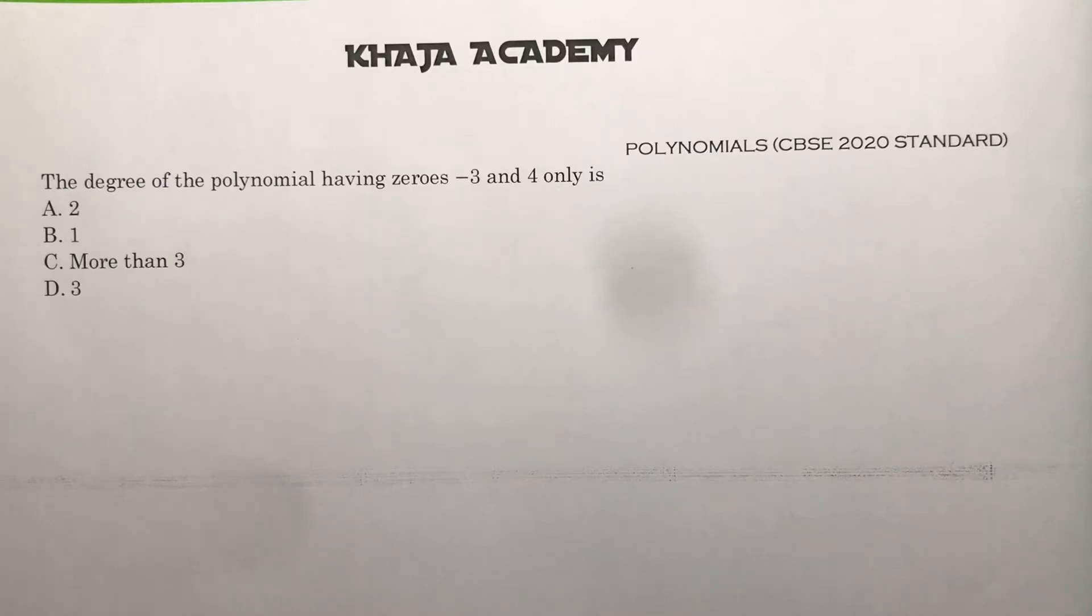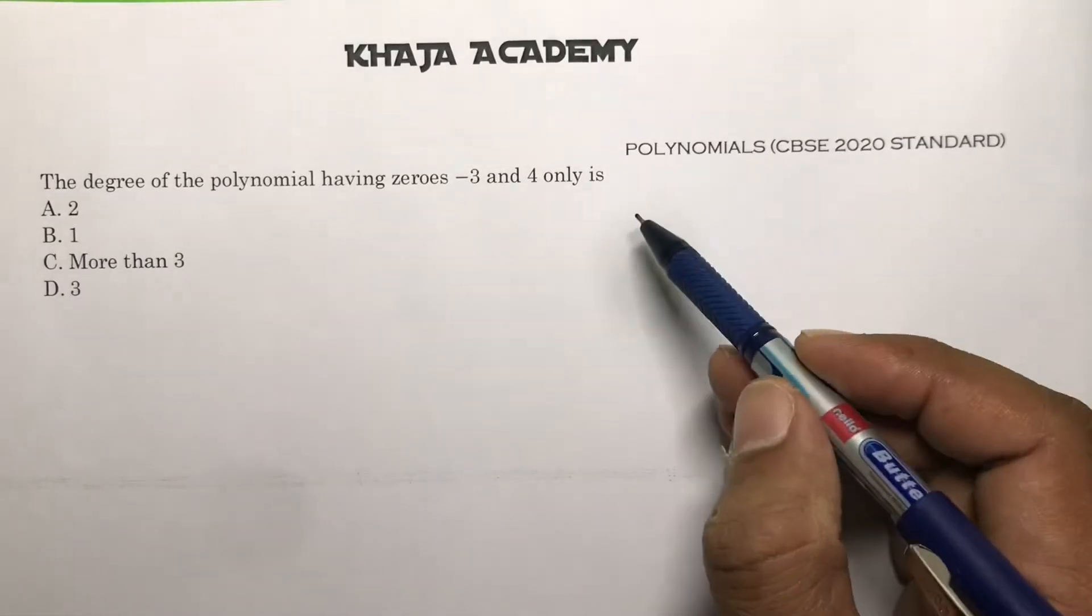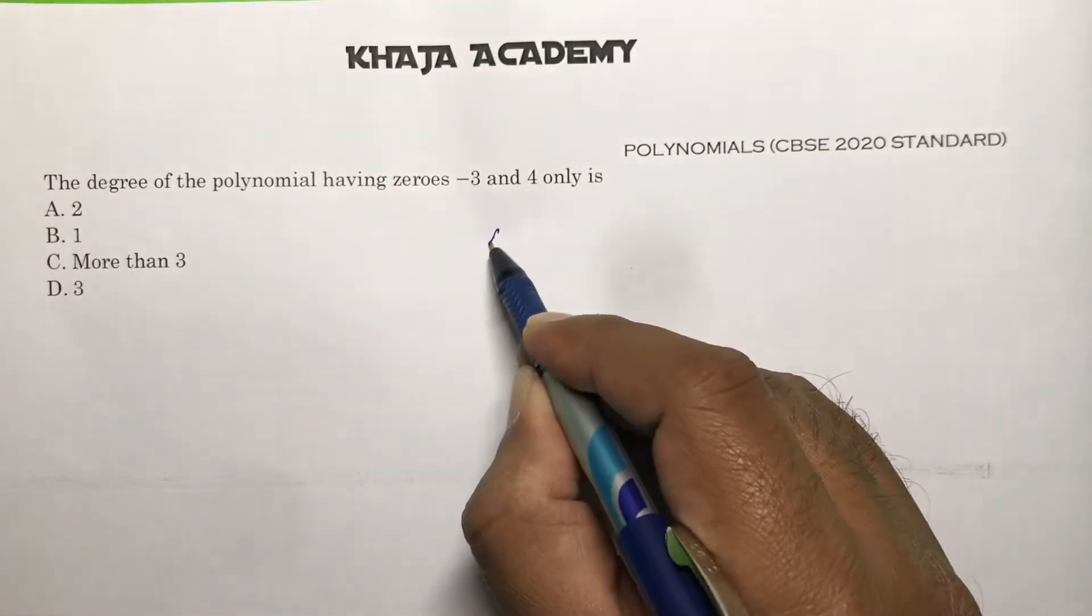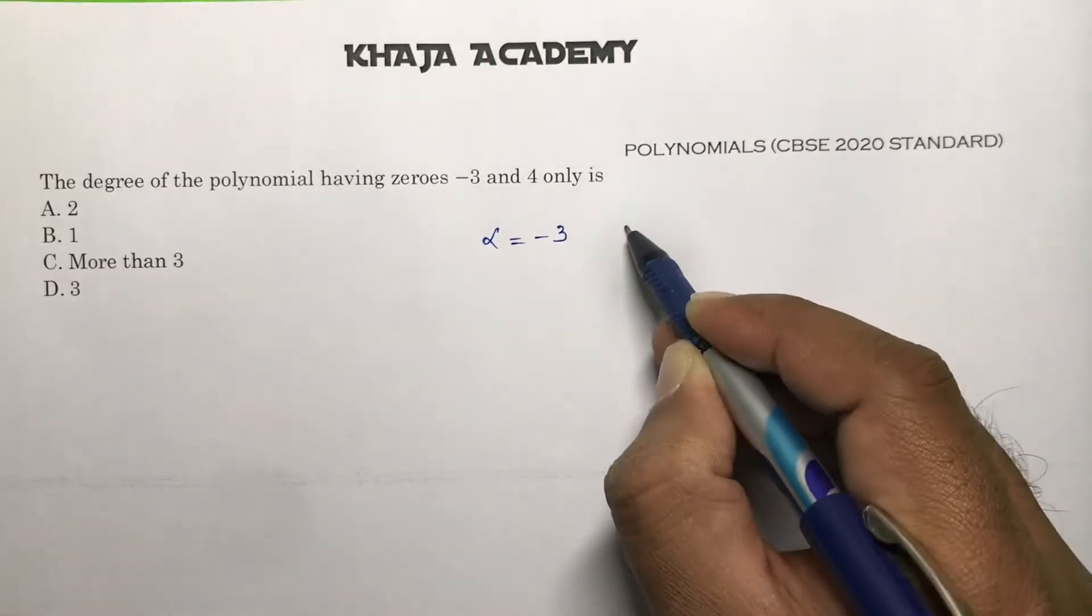The degree of the polynomial having zeros minus 3 and 4 only - if it has only two zeros, the degree will be 2. Otherwise, I'll justify this problem. So alpha you can consider as minus 3, beta you can take it as 4.